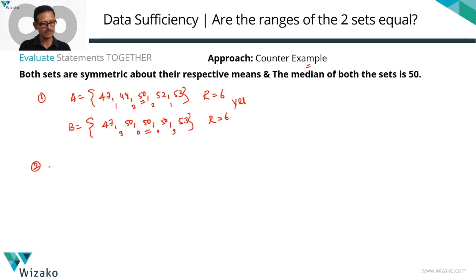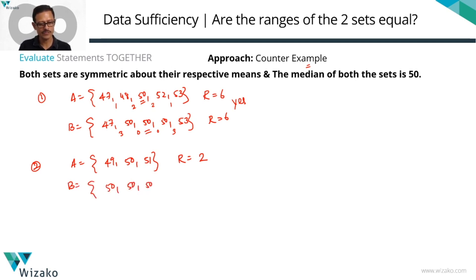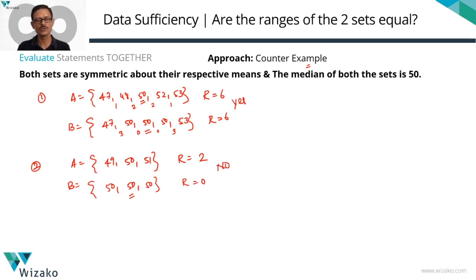Now looking for a counterexample. Set A: 49, 50, 51 — an AP, symmetric about the mean, range = 2. Set B: 50, 50, 50 — all numbers are the same, definitely symmetric about the mean, median = 50, number of elements is the same. Range of B equals 0. The ranges are not the same, so the answer is no. Despite combining the two statements, we have not got a conclusive answer. Eliminate answer option C. Answer option E is correct.